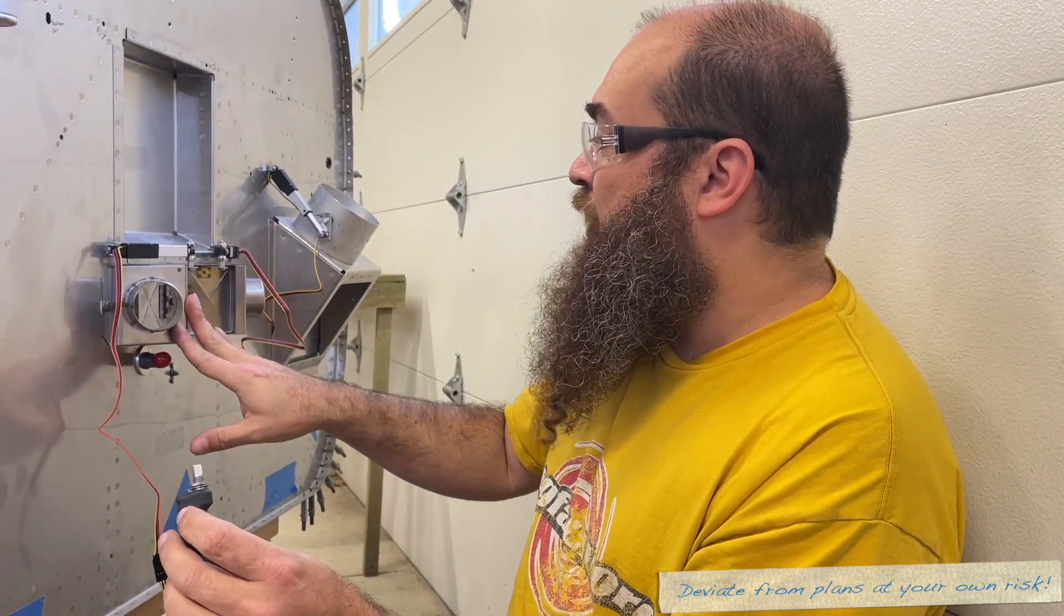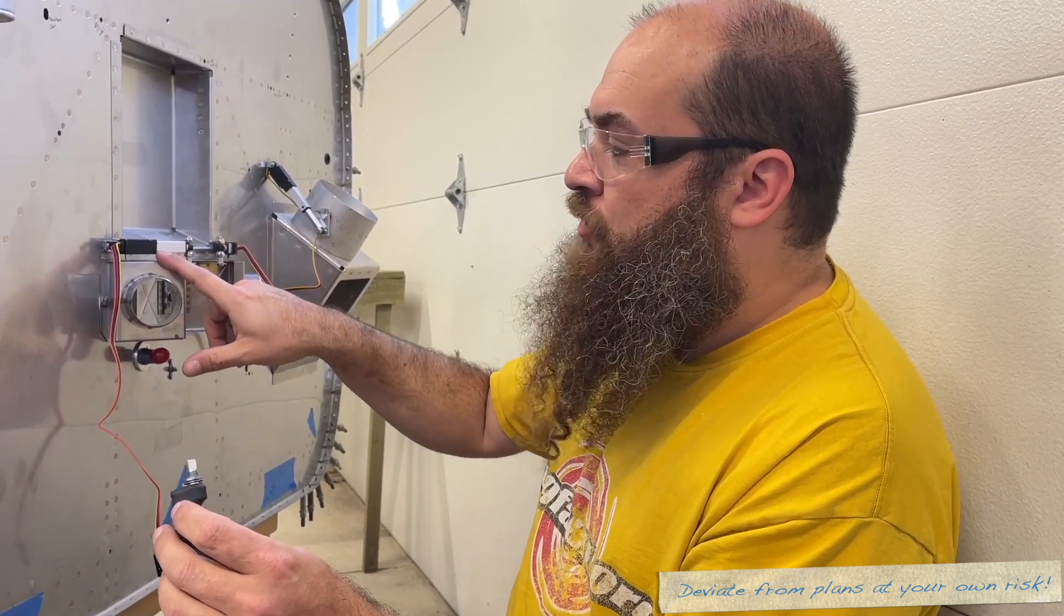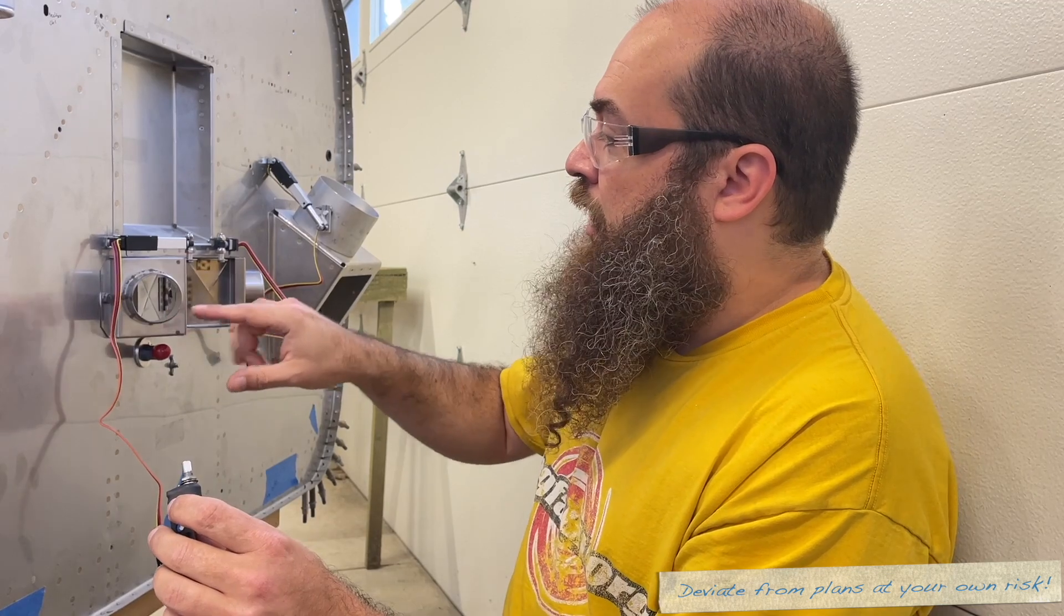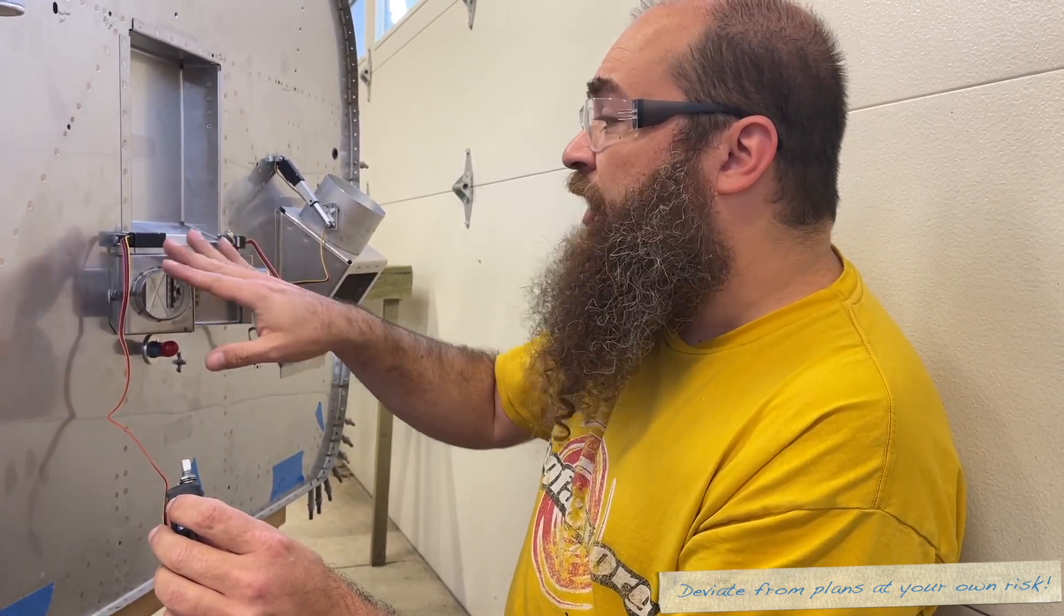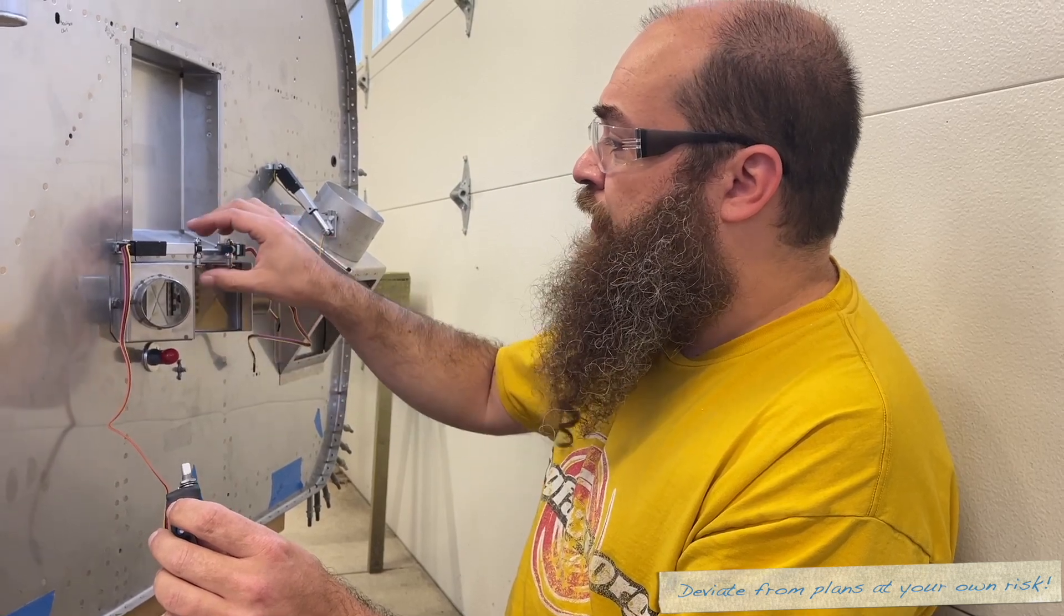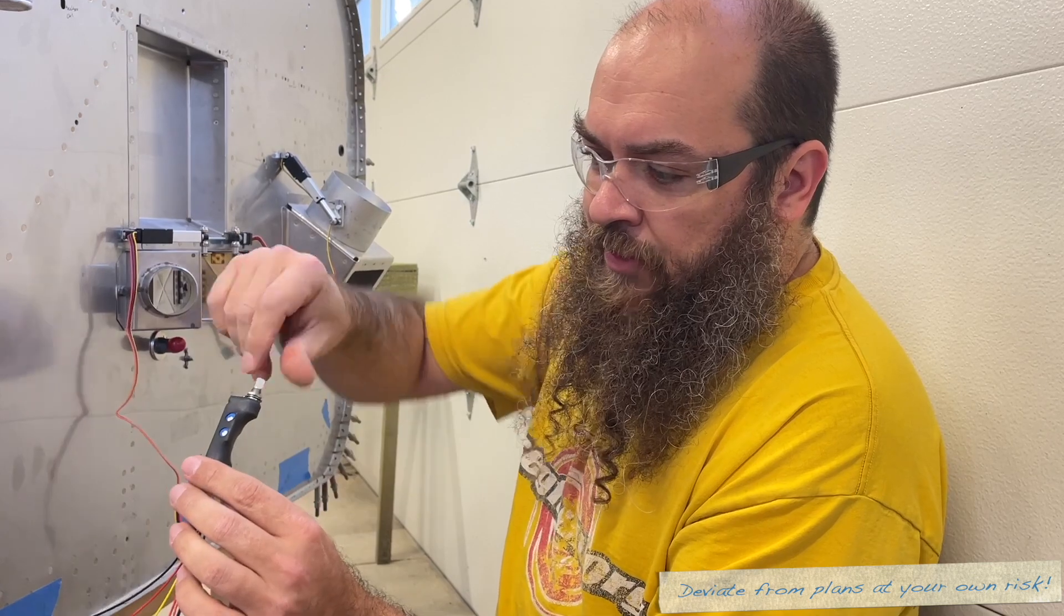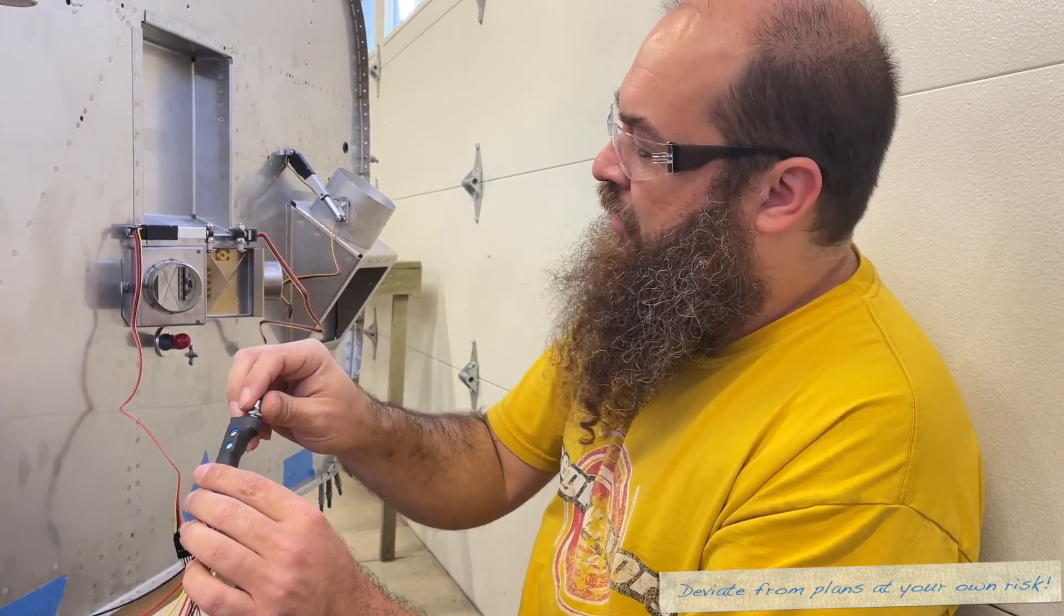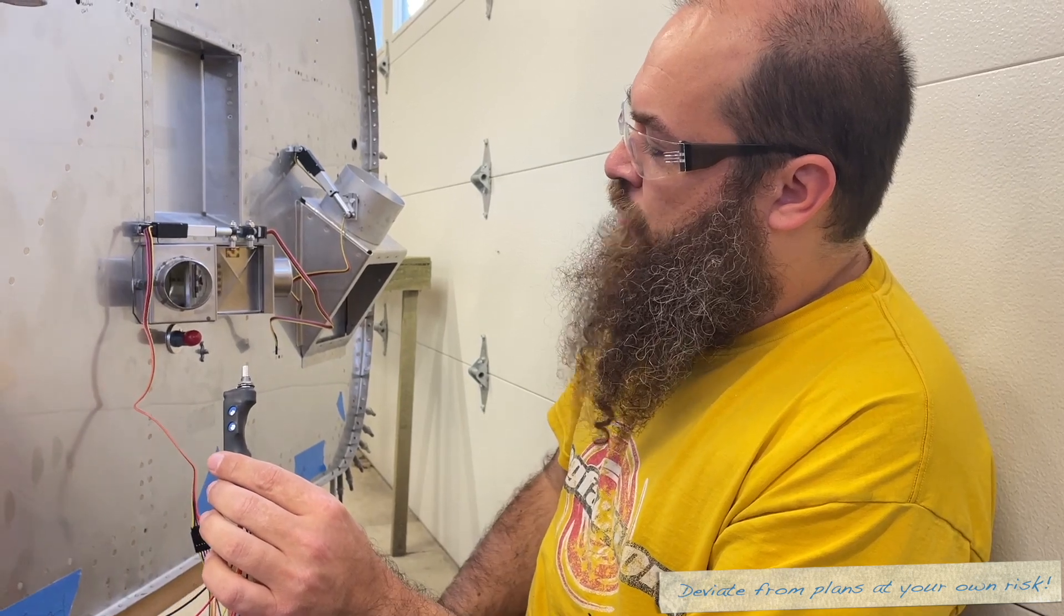So the other thing that we chose to do here that was not stock was we're using these actuators from TCW tech instead of the push-pull knobs. We thought these were really nice, it's a really nice setup and uses these servos and they send you this little control head that you'll put a knob on and put on the panel and you can just set how much to open and it'll open and close it.